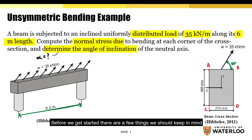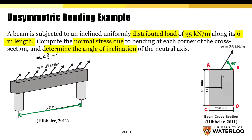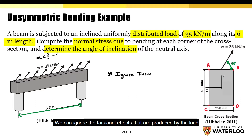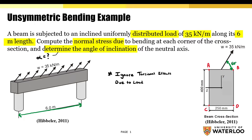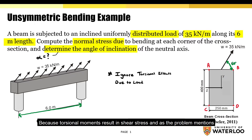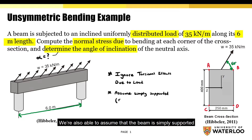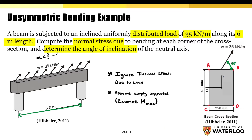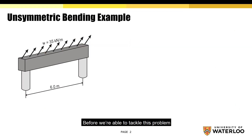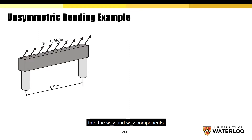Before we get started there are a few things we should keep in mind. We can ignore the torsional effects produced by the load because torsional effects result in shear stress, and as the problem mentions, we're only interested in the normal stress produced by the load. We're also able to assume that the beam is simply supported, meaning we'll need to examine M max. The first thing we'll have to do is break up the inclined load into the Wy and Wz components.